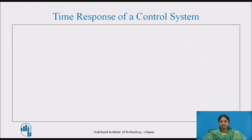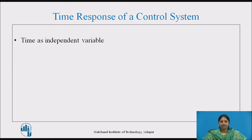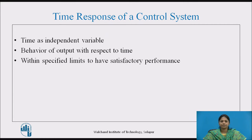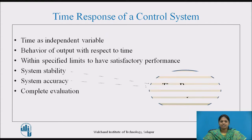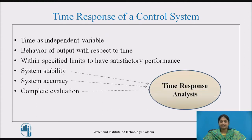Let's understand what time response of a control system means. Most control systems use time as their independent variable, so it is important to analyze the response given by the system for the applied excitation, which is a function of time. Analysis of response means to see the variations of output with respect to time. The output behavior with respect to time should be within specified limits to have a satisfactory performance of the system. The complete basis of stability analysis lies in the time response analysis. System stability, system accuracy, and system evaluation are always based on time response analysis and its corresponding results.